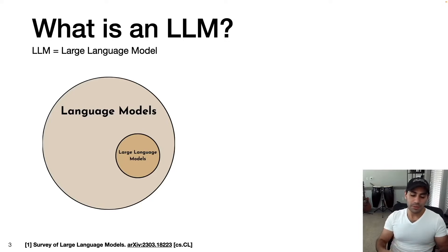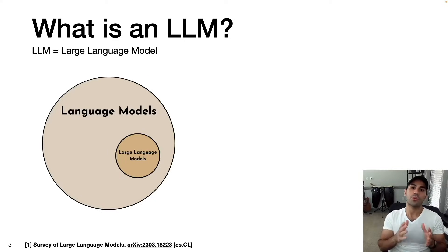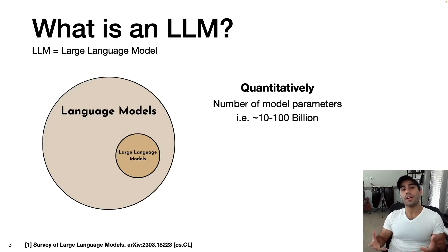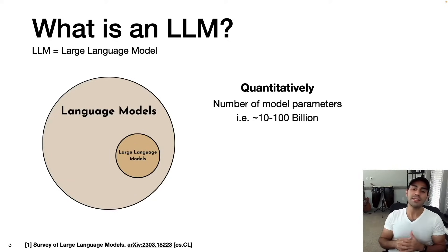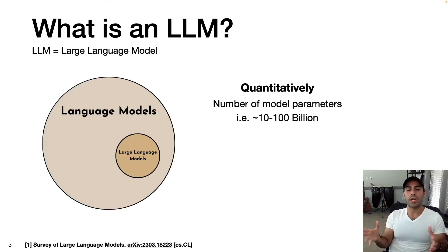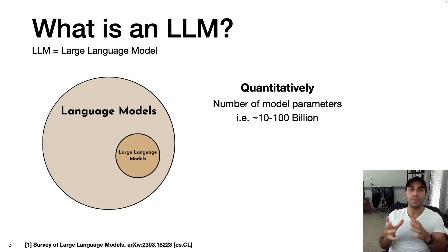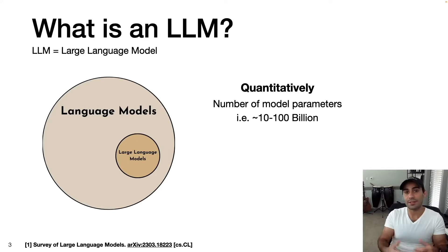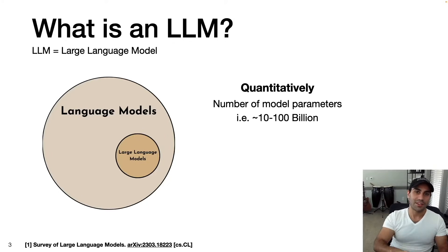There's a lot that can be said about large language models, but to keep things simple, I'm going to talk about two distinguishing properties: the first, quantitative, and the second, qualitative. So quantitatively, large language models are large — they have many, many more model parameters than past language models. These days, this is anywhere from tens to hundreds of billions of parameters. The model parameters are numbers that define how the model will take an input and generate the output. It's essentially the numbers that define the model itself.